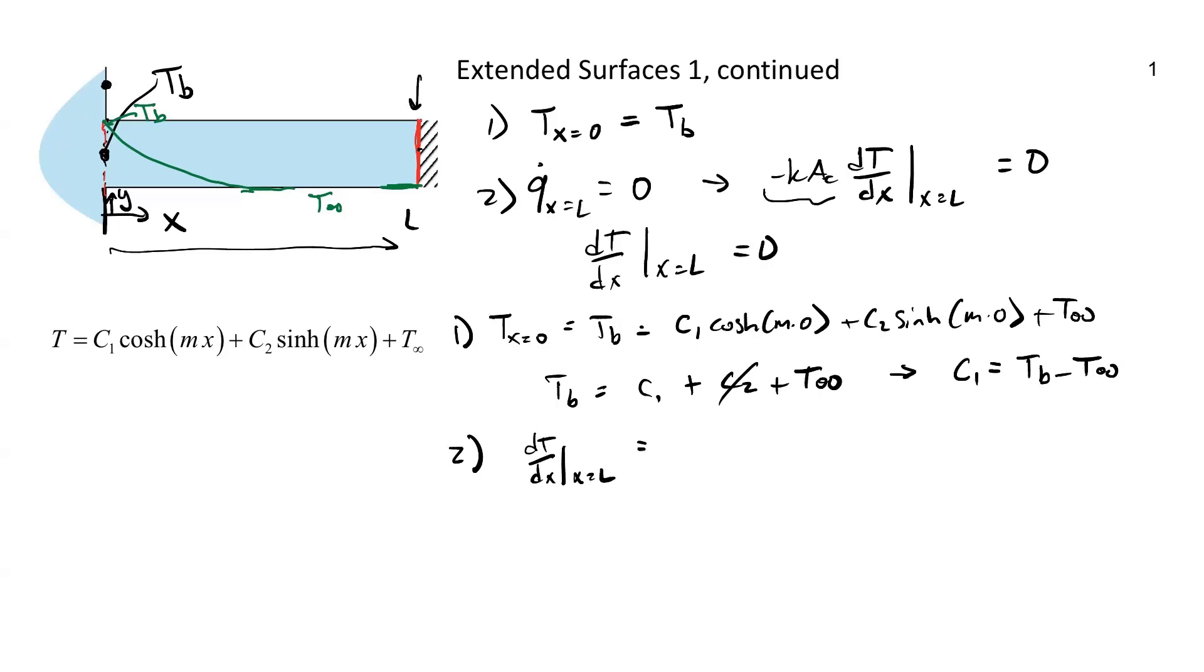What's the derivative of the first term C1 cosh MX. It's going to be C1 times M times, what's the derivative of cosh behaves a lot like sine and cosine. The only difference is that the derivative of sinh and cosh never switch signs. In sine and cosine, sometimes it'll switch back and forth. Here it's always positive, always the same sign. So it's now C1 times M times sinh of ML, plus C2 M cosh of ML. And then T infinity goes away. And then this is all equal to zero.